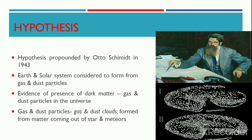In this hypothesis, the Earth and the solar system are considered to be formed from gas and dust particles. Scientific research has proved that there are enough evidences for the presence of dark matter in the form of gas and dust particles in the universe. These gas and dust particles are called gas and dust clouds. Schmidt stated that these gas and dust clouds were formed from the matter coming out of the stars and the meteors.